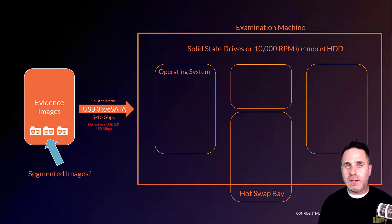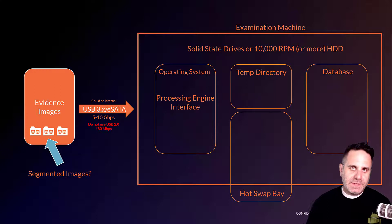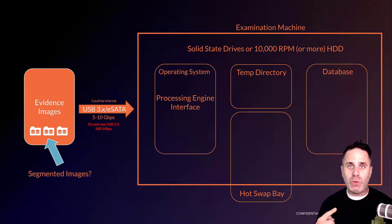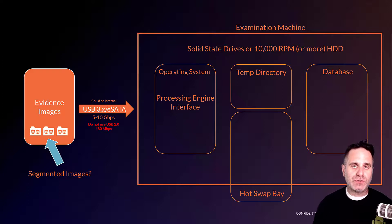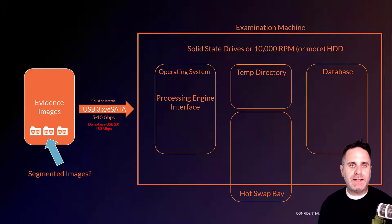You're going to need an operating system, and FTK only operates on a Windows operating system. FTK has a couple of components that make it run — it's designed for large data sets. Because of that, we have a processing engine, a temp directory we need to manage, and we have the database. Then of course we have the interface itself. We want to have these on different drives to maximize the IO of each disk.